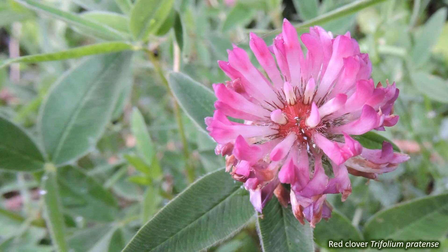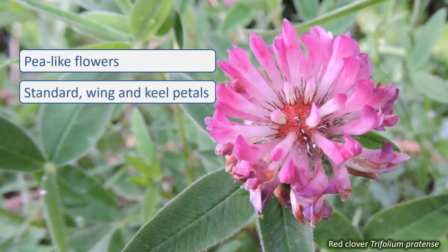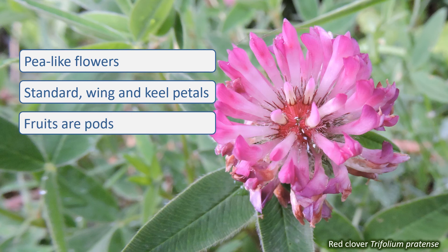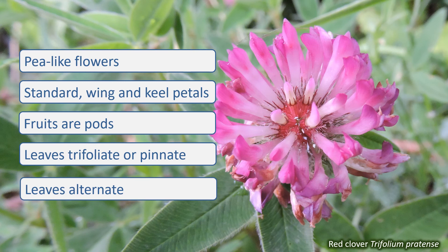So, a plant that has pea-like flowers with large standard petals, side wings, and lower keels, that produces pods, and that has trifoliate or pinnate leaves arranged alternately up the stem, is going to be a member of the Fabaceae.